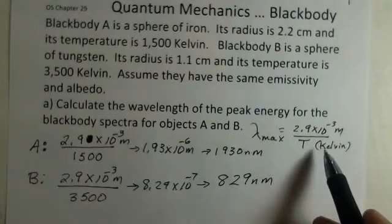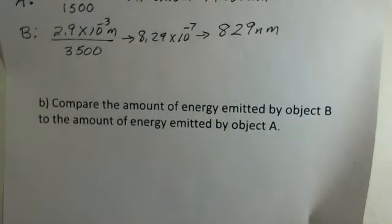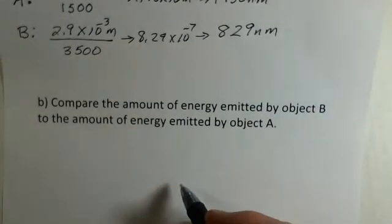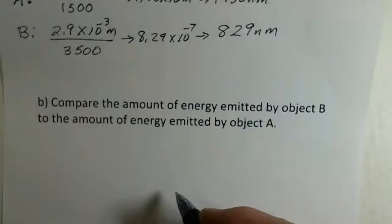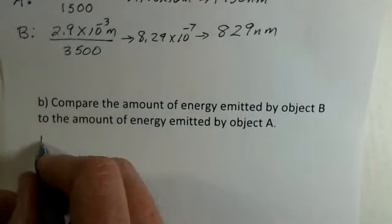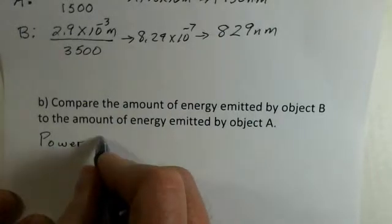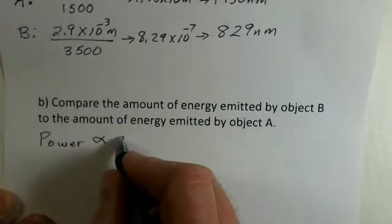So next, let's compare the total amount of energy emitted. If you want energy per second, doesn't matter, or the power. The wording could be: how much power does object B emit compared to the amount of power emitted by object A? Or the energy per second, or in one second how much energy will object B emit compared to object A? Well, in calculating the power, we know that we have to write it here.